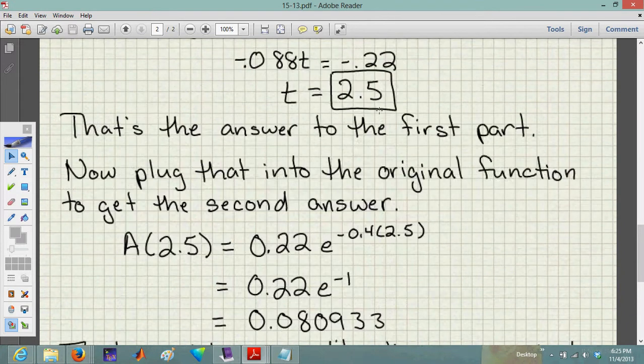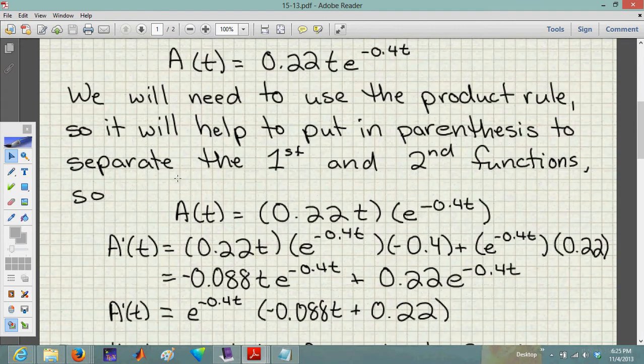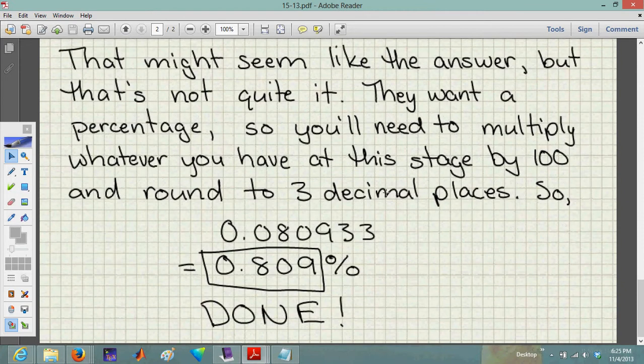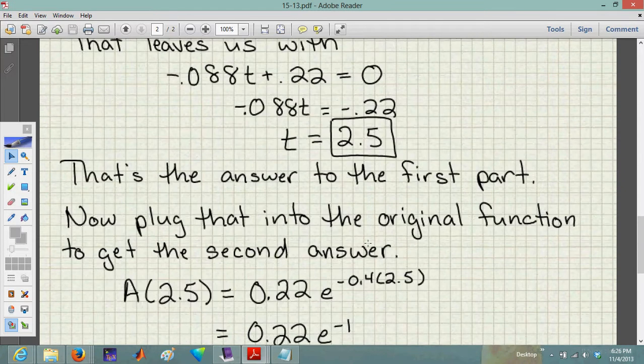You don't have the answer yet. Because what they're asking for, back up to the top here, is they're asking for a percentage here. So what we have to do is take that decimal that we found down here and multiply it times 100. So once you've multiplied your decimal answer times 100, you're going to get something along the lines, I imagine you will probably have a 0 out front. In this case, we get 0.809%, and just plug in the 0.809, and then you are done. But do not stop when you get that decimal answer, because that's not in the form of a percent. You need to multiply it times 100 for it to be in the form of a percent. And that is how you do number 13.